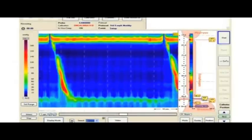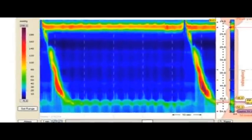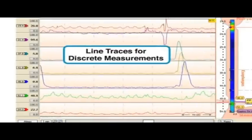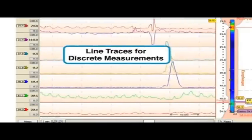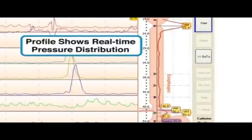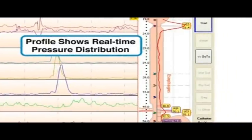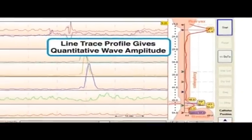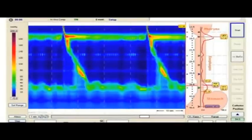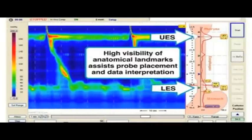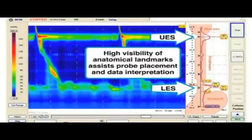The display may be switched instantly to view the same data set as line traces at discrete locations. The pressure profile may be viewed as a color map or as a line trace for quantitative pressure assessment. The high visibility of upper and lower sphincters assists in probe placement and data interpretation.